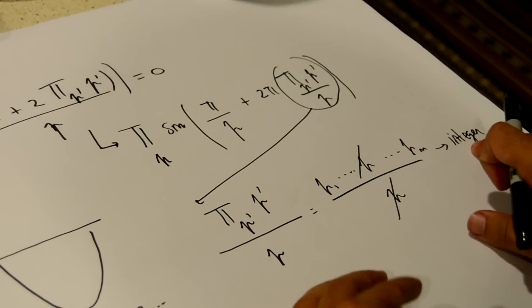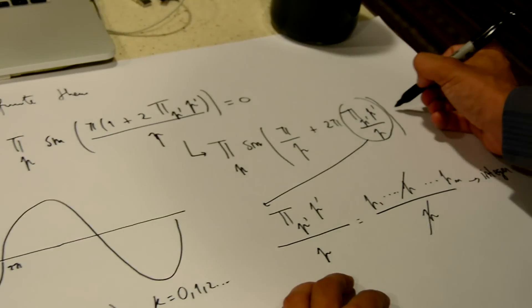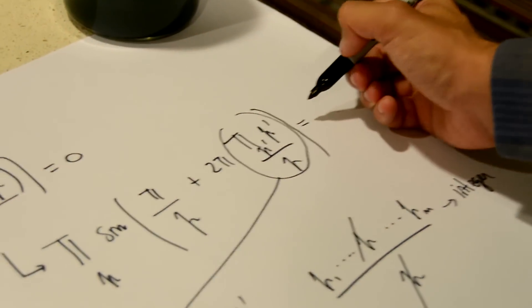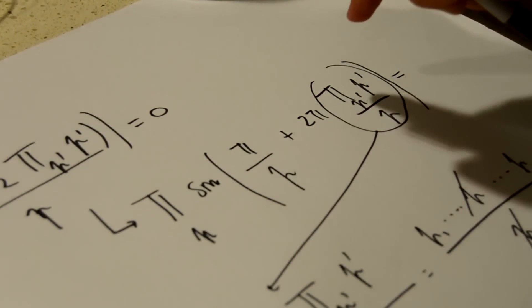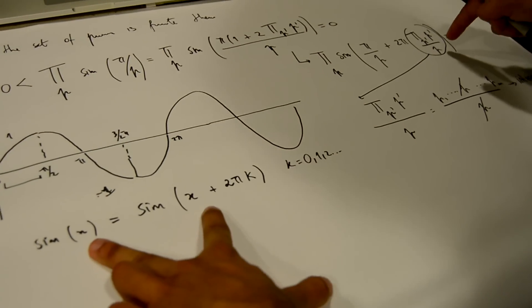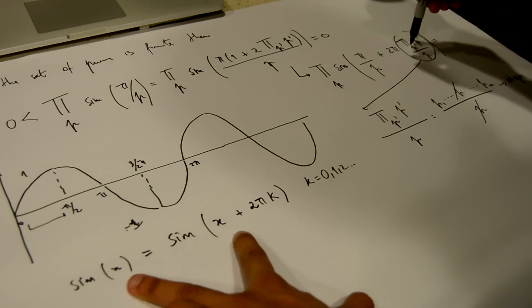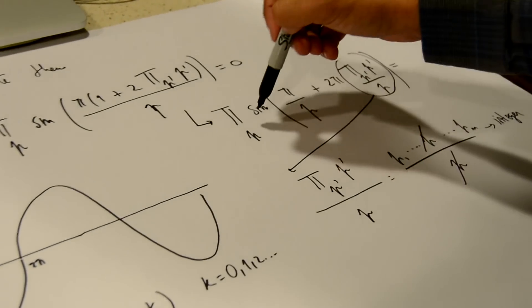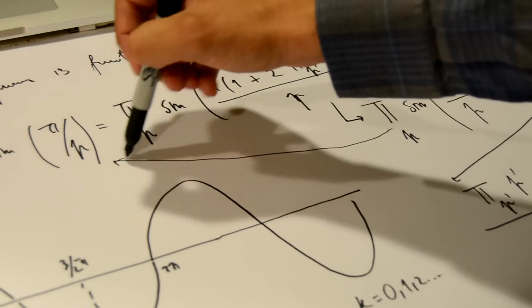Since this is going to be an integer, it is not difficult to see that using this property of the sine function, this here is going to be equal to this.